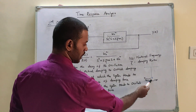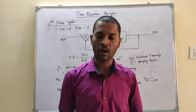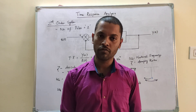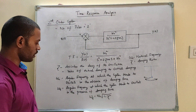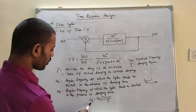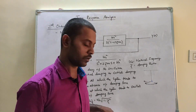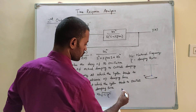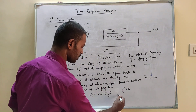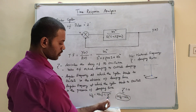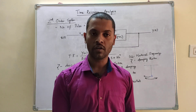In the presence of a damping force, the oscillation frequency is called the damped frequency. Omega_d is the angular frequency at which the system tends to oscillate in the presence of damping force. The formula is: omega_d equals omega_n times the square root of 1 minus zeta squared. If zeta equals 0, then omega_d equals omega_n — the damped frequency equals the natural frequency.